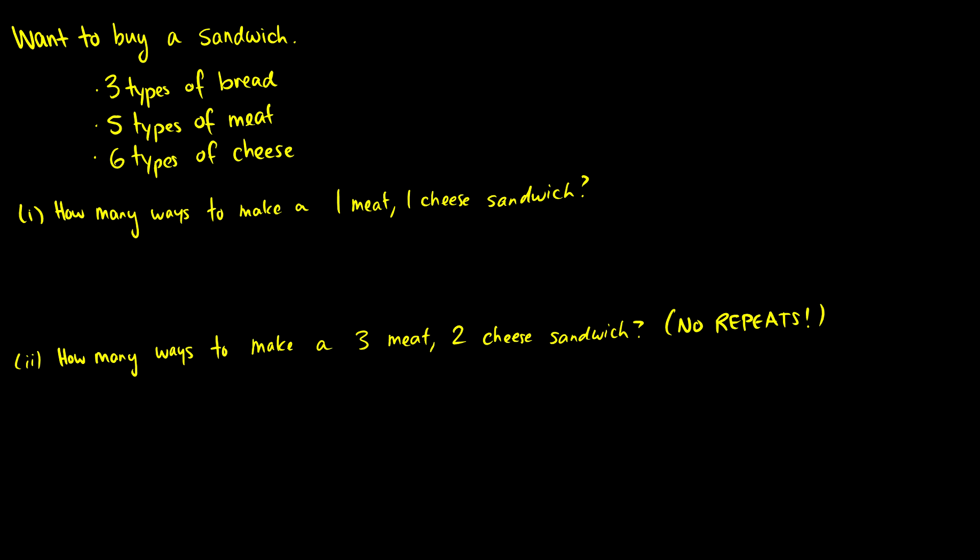So how many ways can we make a one meat, one cheese sandwich? Well, first we choose our type of bread, so there's three types. Then we want to choose our meat, so there's five types we can choose from. Then we want to choose our cheese. There's six types to choose from.